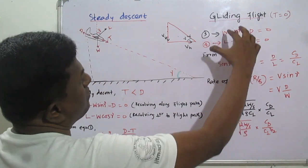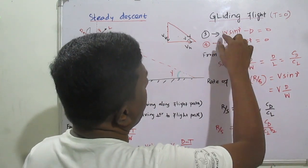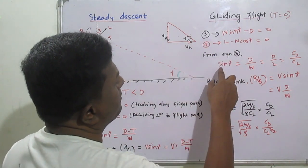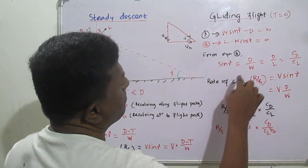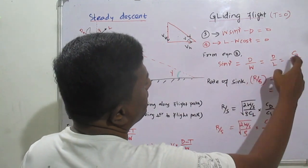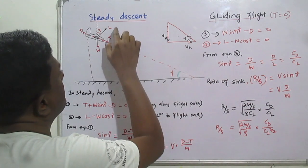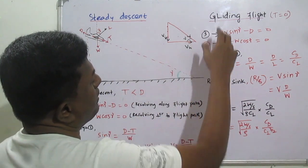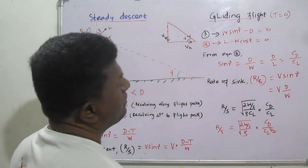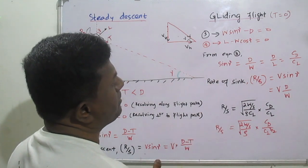The second equation for gliding flight is: L − W cos γ = 0. So we get two equations of motion for gliding flight. From the first equation, sin γ = D / W. Since in steady level flight W = L, we can write sin γ = D/L = C_D / C_L.